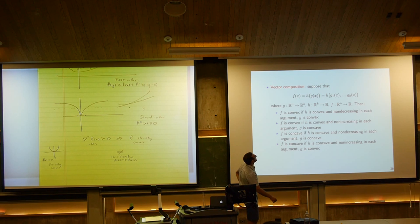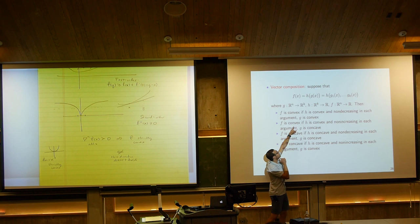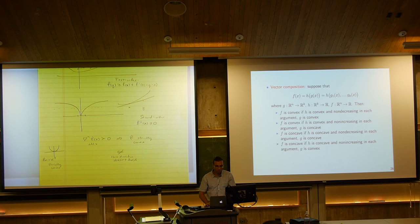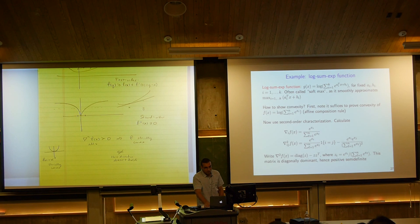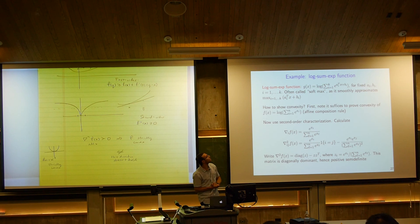A nice example of a convex function we'll return to often is the log-sum-exp function, sometimes called the smooth max or soft max. The claim is that log(Σ exp(aᵢᵀx + bᵢ)) is a convex function of x. This function approximates the maximum of the linear functions aᵢᵀx + bᵢ — that's why it's sometimes called the smooth max.